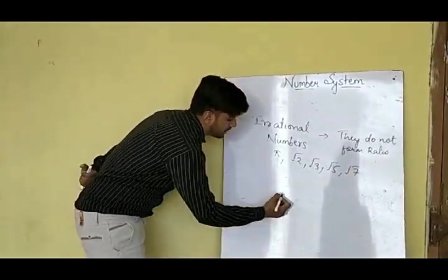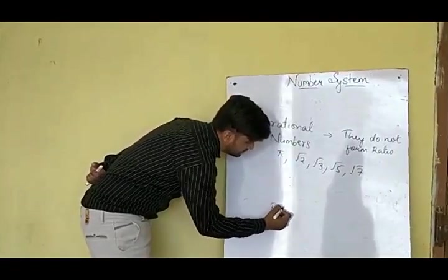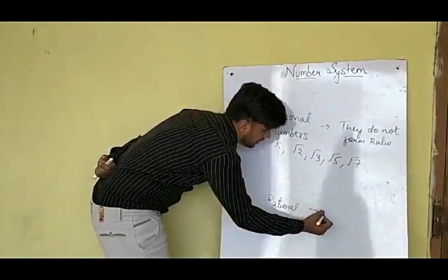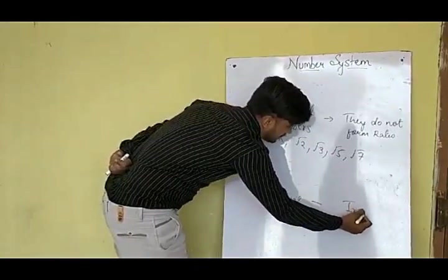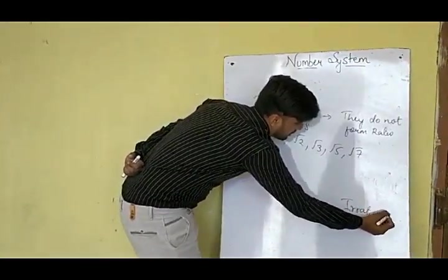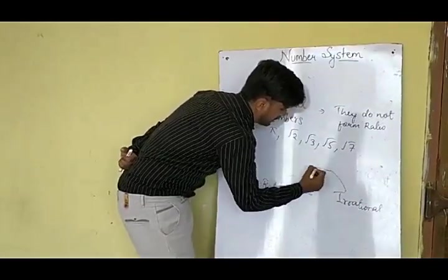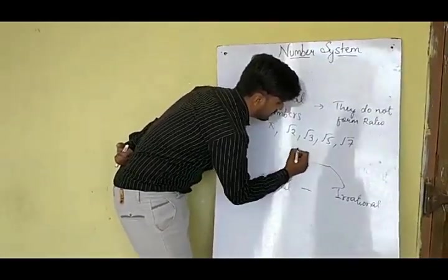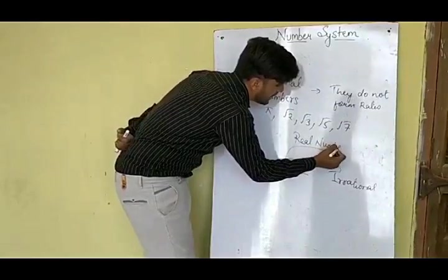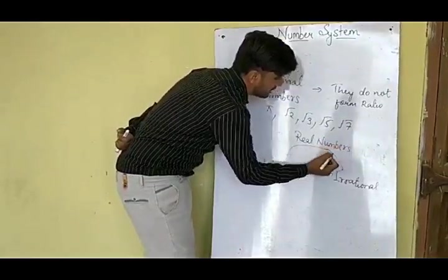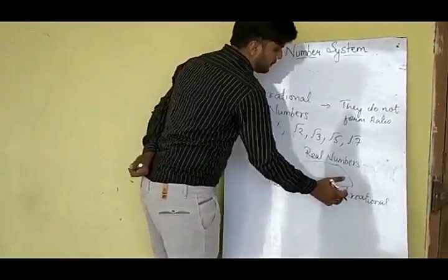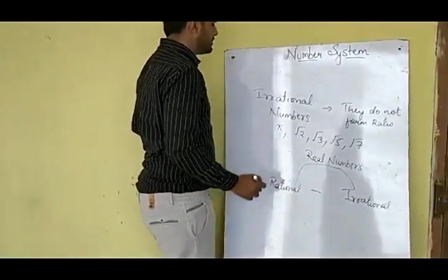So rational numbers and irrational numbers together are called real numbers. These numbers together are called real numbers. Real numbers consist of rational numbers and irrational numbers.